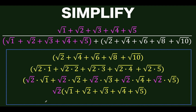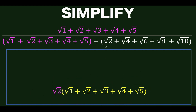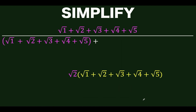Notice that this pink square root of 2 is common among these five terms, and we can factor out that common factor, square root of 2, to arrive at a factored form. We factor out square root of 2, so each term divided by square root of 2 yields square root of 1, square root of 2, and so on up to square root of 5. So we can now replace this part of the denominator with this result.